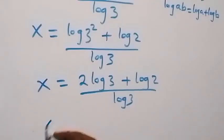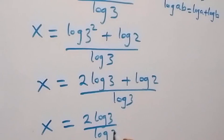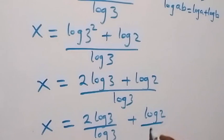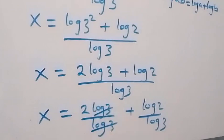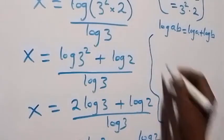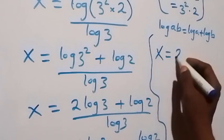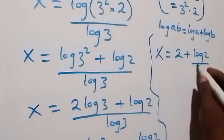Then we can separate this fraction here as x now equals to (2 log 3 over log 3) plus (log 2 over log 3). Then log 3 cancels log 3 here, leaving 2, and from here we have x now equals to 2 plus log 2 over log 3.